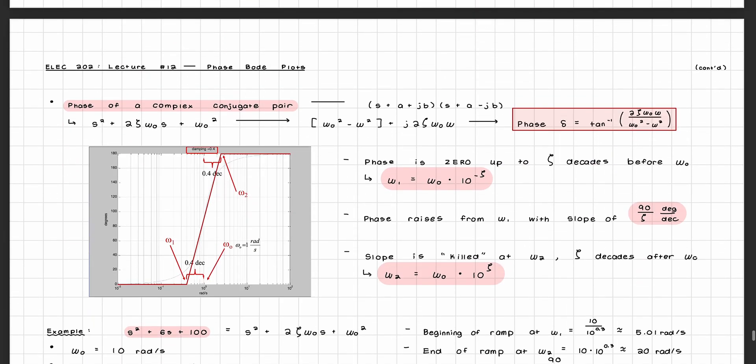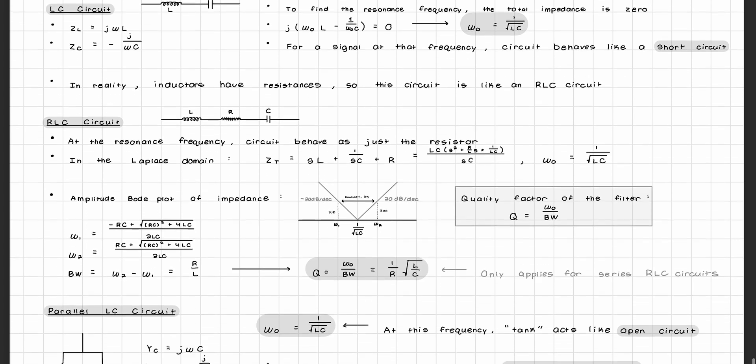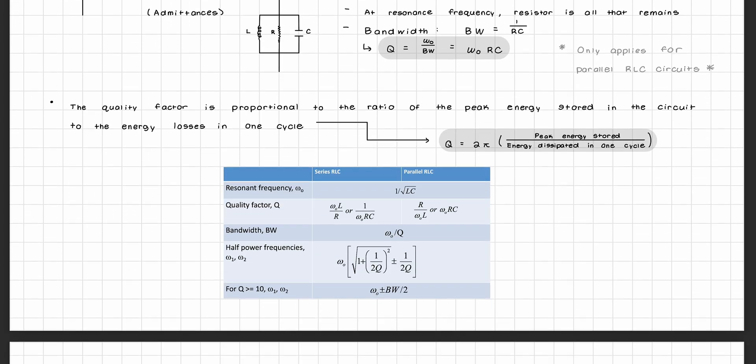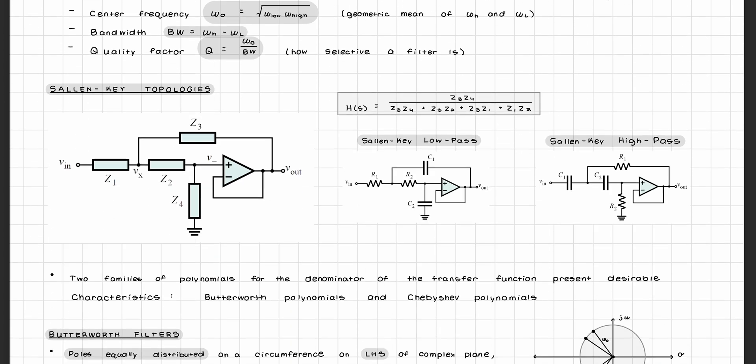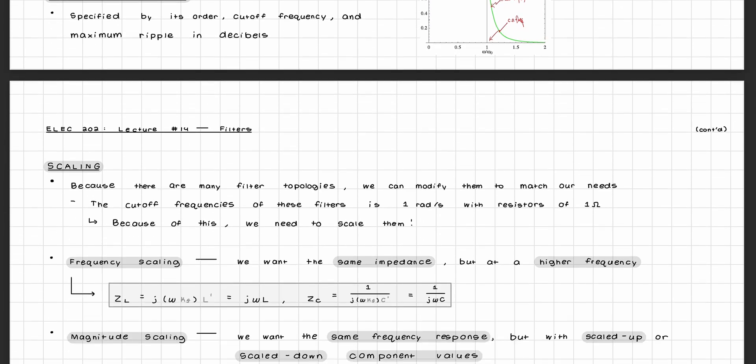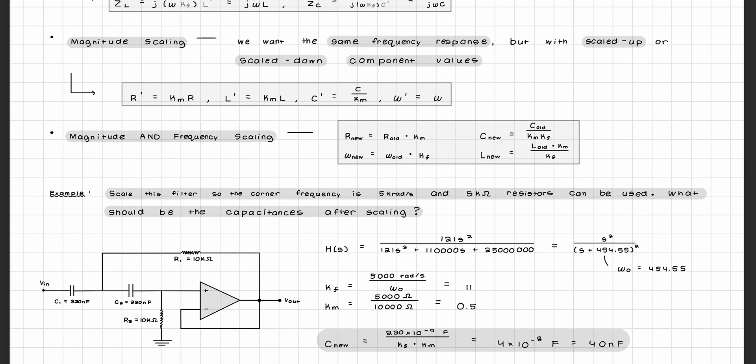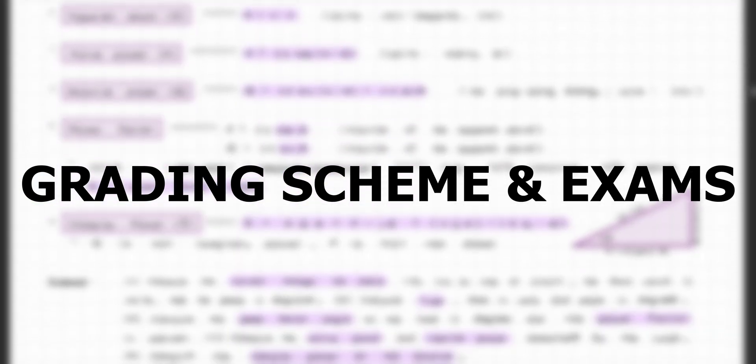In the last part of the course you will learn how to draw the amplitude and phase Bode plots of different transfer functions, what resonance is and how it relates to bandwidth and quality factors, different types of filters such as low-pass, high-pass, Sallen-Key, and Butterworth filters, how to scale different filters to use certain components, and two-port networks. This brought us to around the third midterm exam, and the time after that was all used for in-class review sessions.